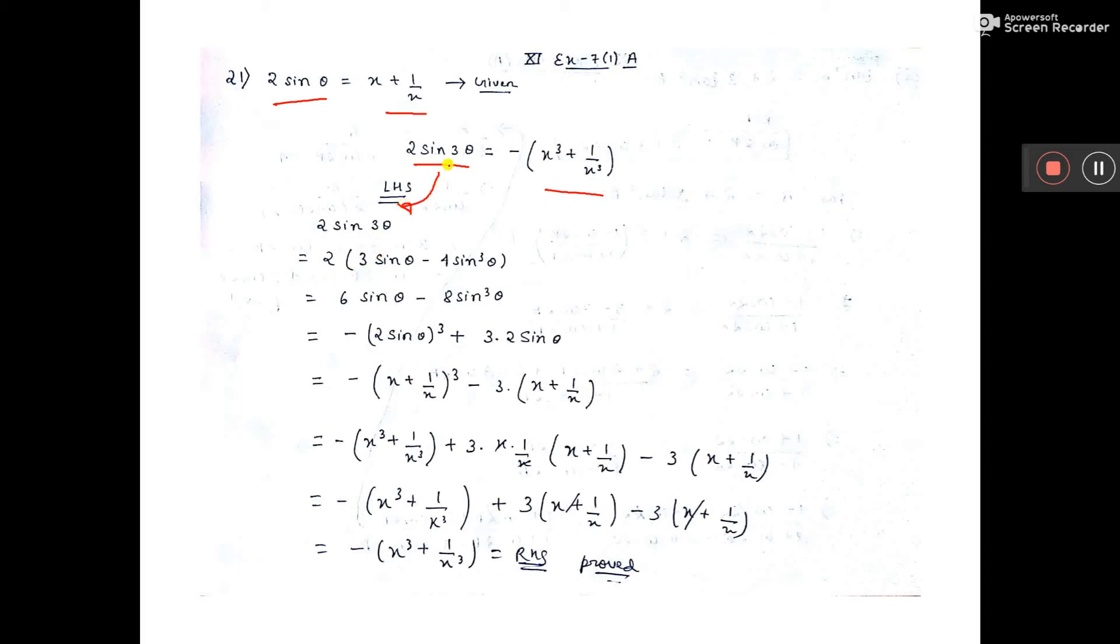2 into, now sin 3 theta formula: 3 sin theta minus 4 sin cube theta. This sin 3 theta formula, you will get this in multiply angle formulas.